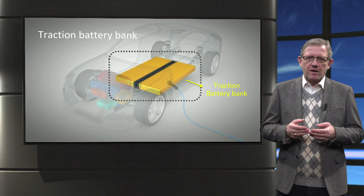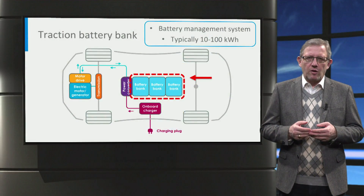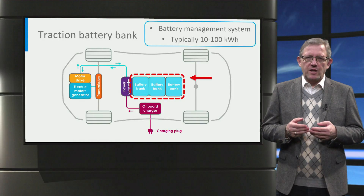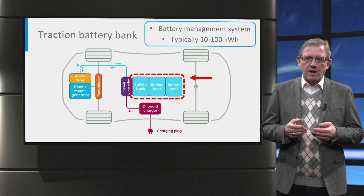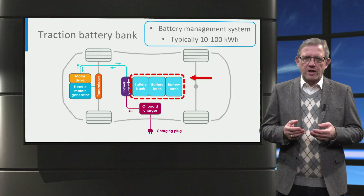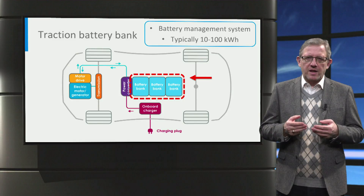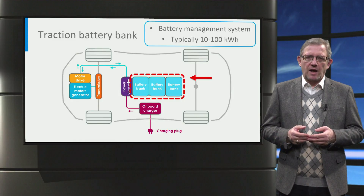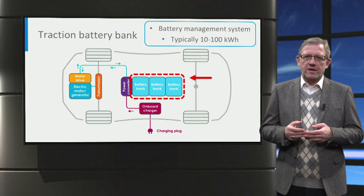Next is the high-voltage traction battery which is the heart of any electric vehicle. Generally, the battery is located at the bottom of the car but this can vary depending on the manufacturer. The role of the battery is to store energy for the propulsion of the vehicle. The battery has a battery management system that monitors and regulates the battery charging characteristics such as voltage, current, temperature and state of charge. The energy content of a battery is normally expressed in kilowatt hours. Nowadays electric cars have battery sizes in the range of 10 to 100 kilowatt hours.